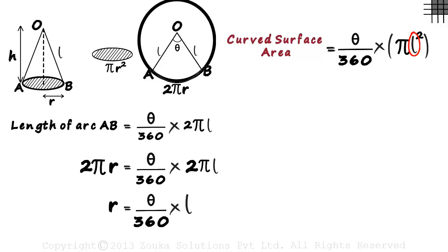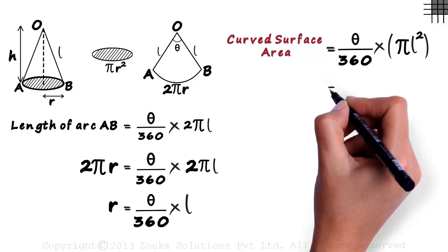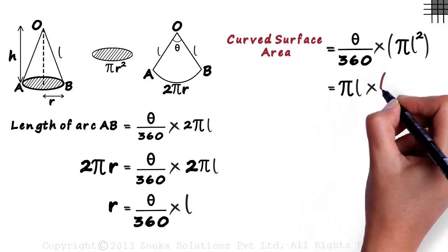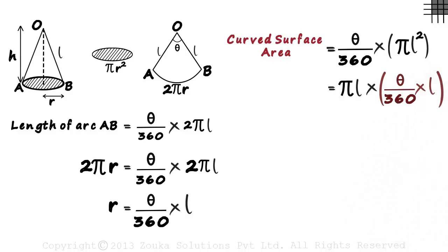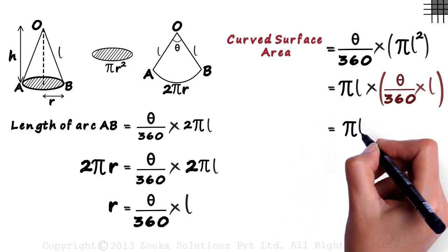Can we write this a bit differently? Yes, this can also be written as pi L multiplied by theta by 360 multiplied by L. We have just split pi L squared into pi L multiplied by L. But this part in brackets, as we just found out, is equal to R. So the curved surface area will be pi L multiplied by R.